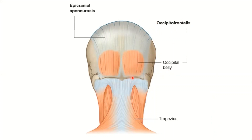The occipital belly of occipitofrontalis is attached to the highest nuchal line, along with the galea aponeurotica. The external occipital protuberance also gives attachment to the ligamentum nuchae.